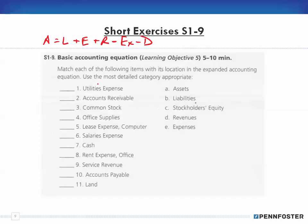The categories here are A through E. Even though dividends are part of the expanded accounting equation, they are derived from the profit or loss on the income statement. So they are only considering liabilities, equity, revenues, and expenses. When categorizing an account, you have to think about what category it belongs to and what its use is.